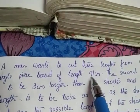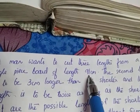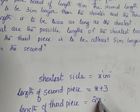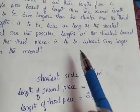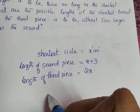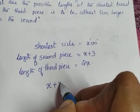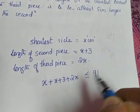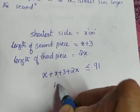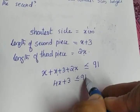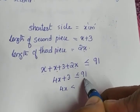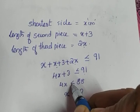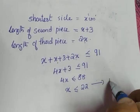The total length of the board is 91 cm. The sum of all three pieces must be less than or equal to 91. So x plus (x plus 3) plus 2x must be less than or equal to 91. Simplifying: 4x plus 3 is less than or equal to 91, which gives 4x less than or equal to 88, so x is less than or equal to 22. Let this be equation number 1.